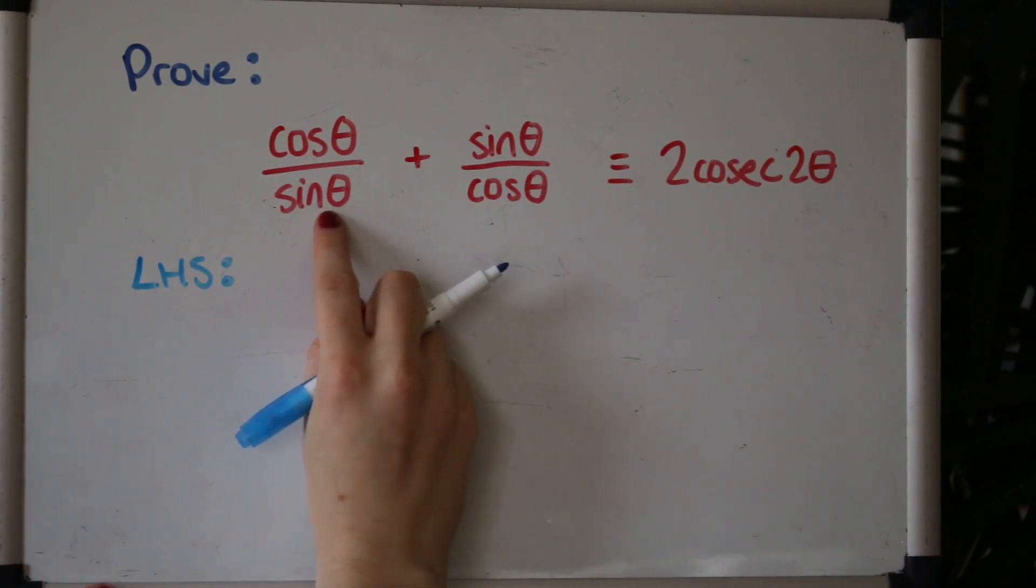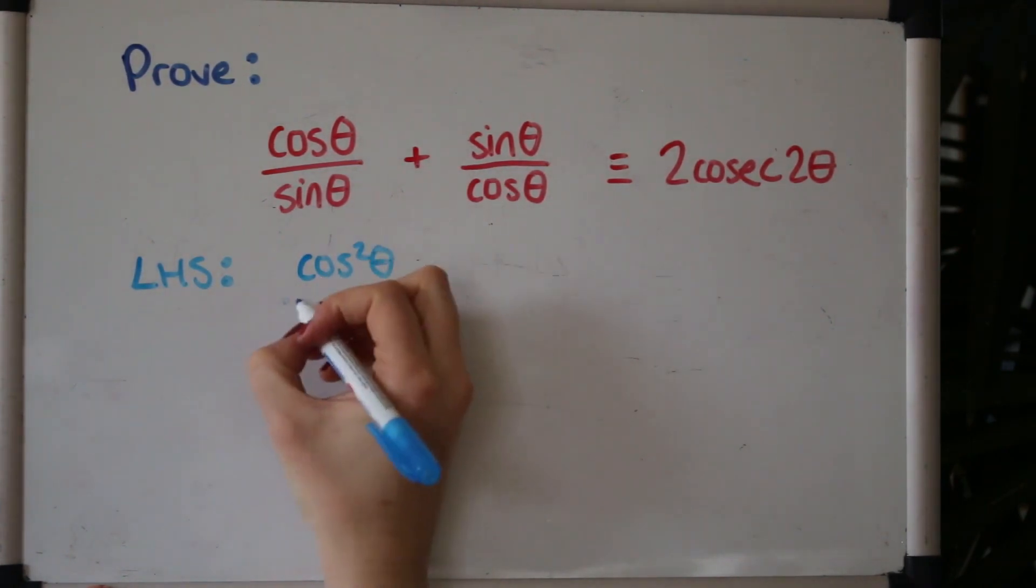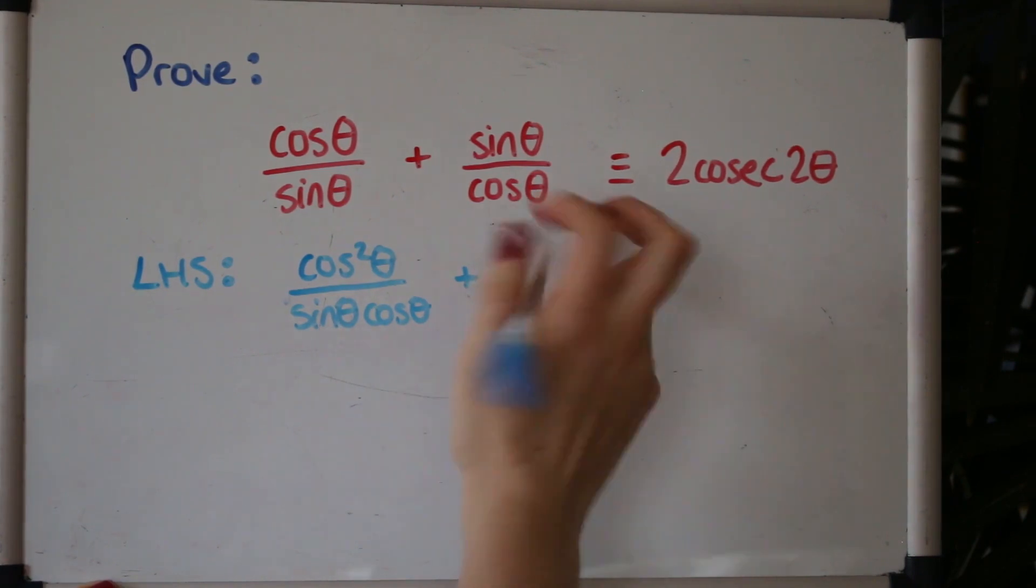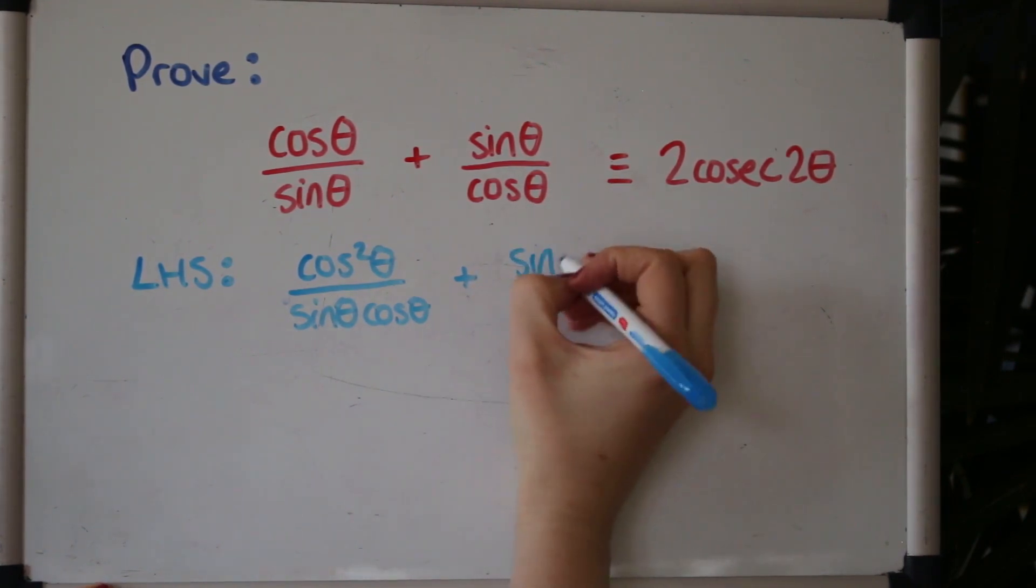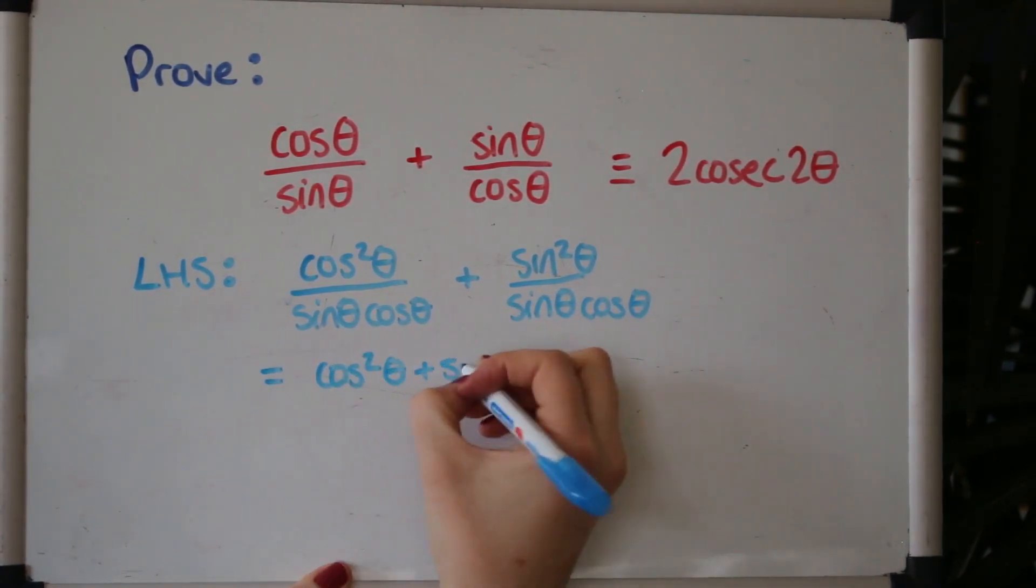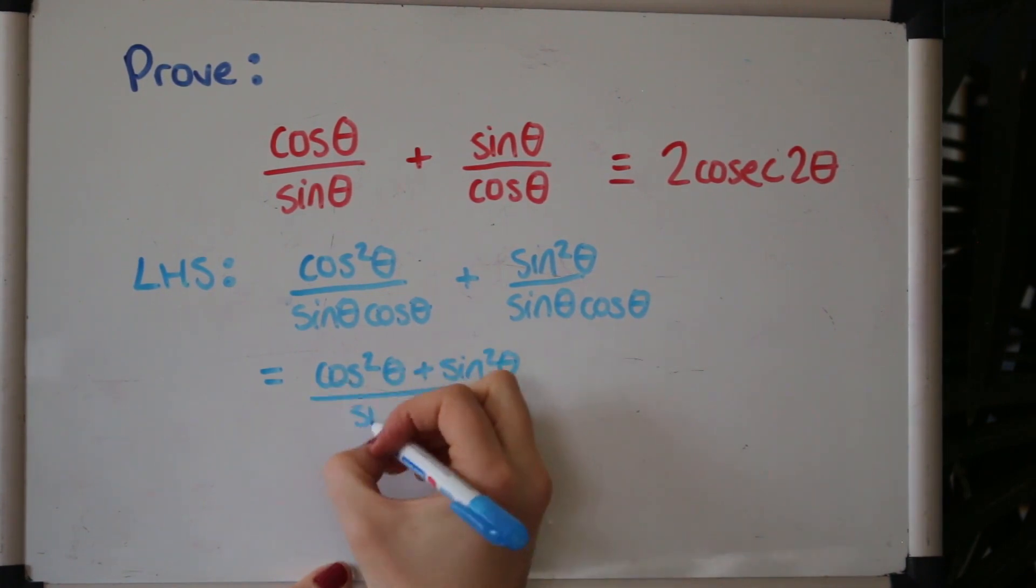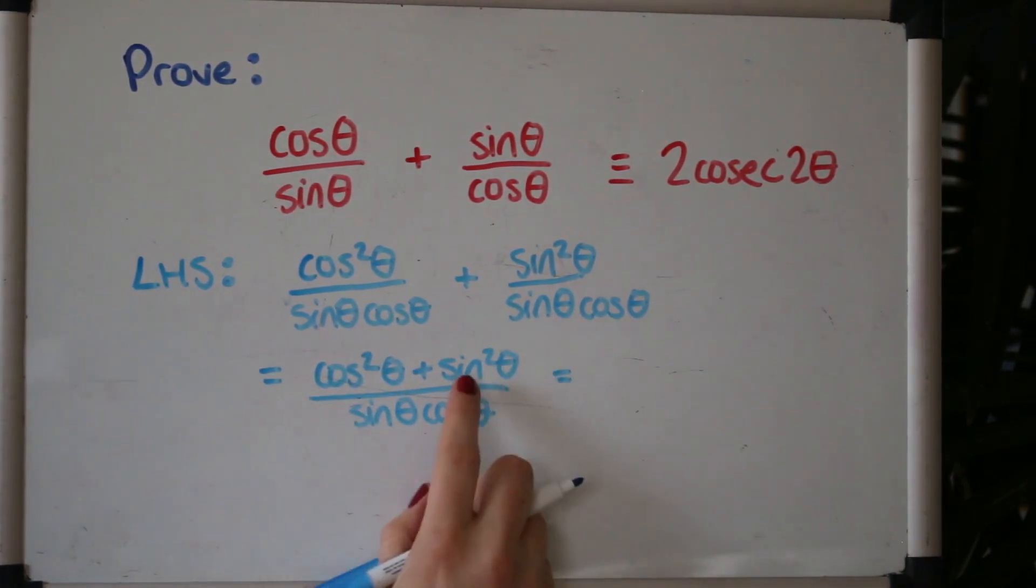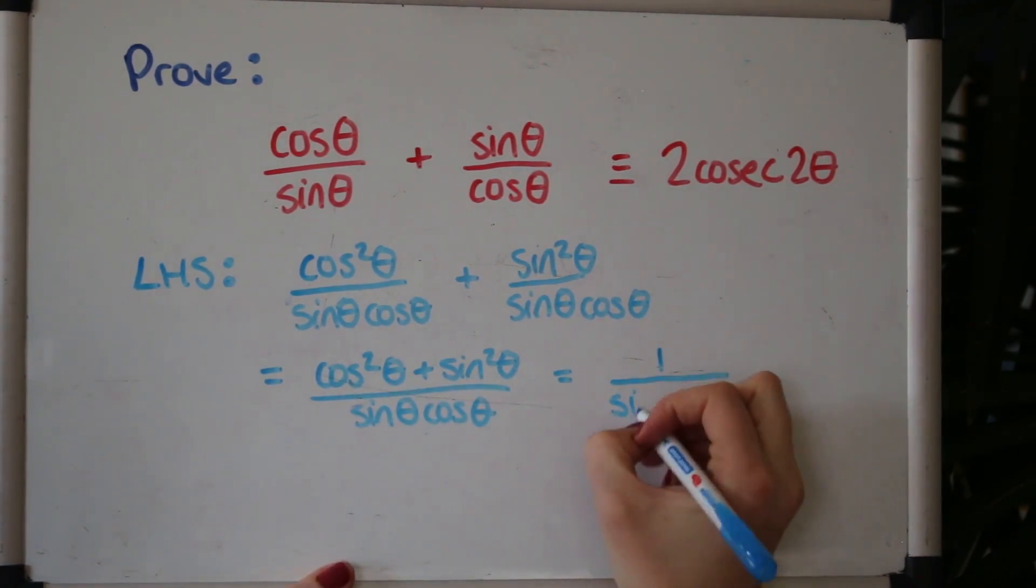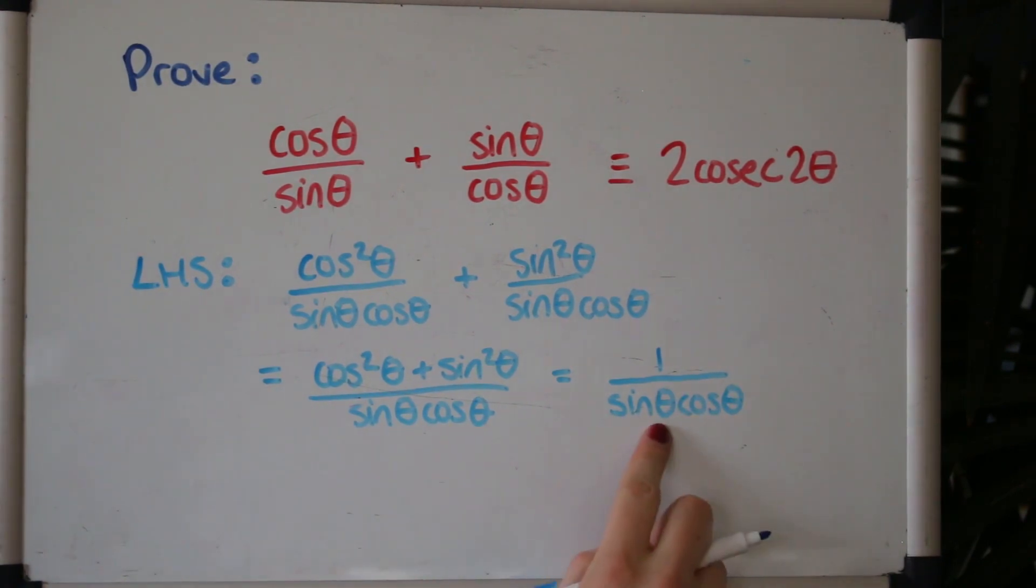So the common denominator will be sinθcosθ. So this side, this fraction, I'm going to times by cosθ on top and bottom. Using the identity, I know that sin²θ plus cos²θ is one.